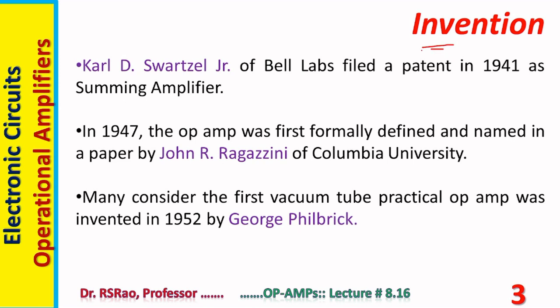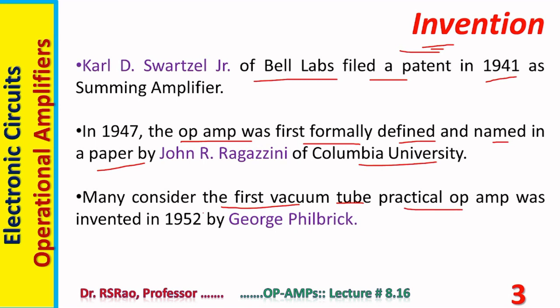A few points regarding invention: Carl D. Schwarzschild Jr. of Bell Labs filed a patent in 1941 as a summing amplifier. This is the starting point of the development of the op-amp. In 1947, the op-amp was first formally defined and named in a paper by John R. Ragajini of Columbia University. It all started about 60 to 65 years back. Many consider the first vacuum tube practical op-amp was invented in 1952 by George Wilbrick.